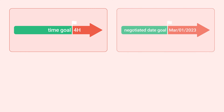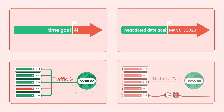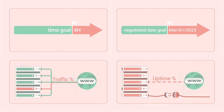Why is SLA important? SLA is essential and required in Jira because it is a popular tool used by teams to manage their projects, tasks, and issues. Without SLA, teams may not be aware of how quickly they need to respond to and resolve customer issues, which can lead to delays and dissatisfaction among customers.